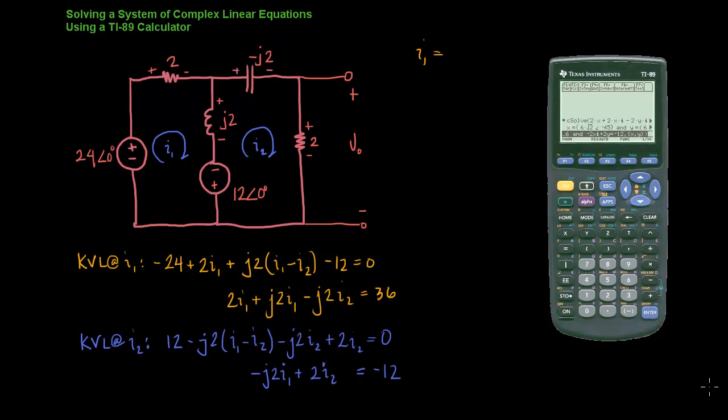Okay, and it does a little bit of thinking, and it comes up with this equation here. Now I can move my cursor up, and I'll be able to shift over and see the entirety of the solution for Y, which is I2. Okay, or I can shift to the right.